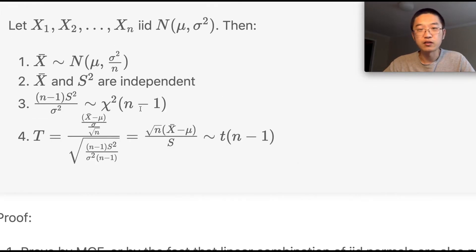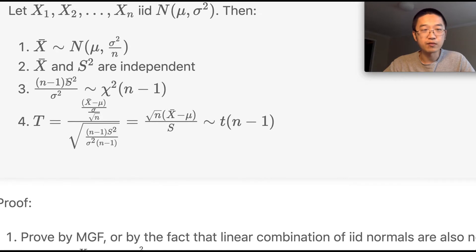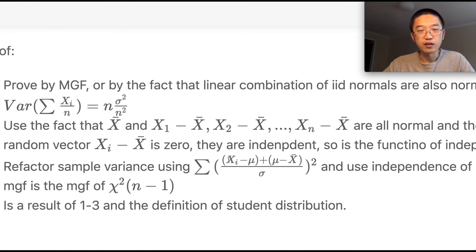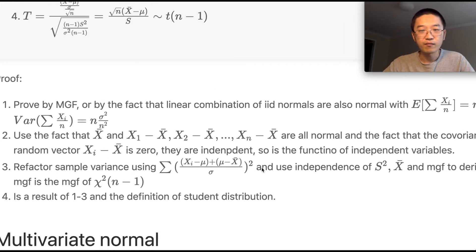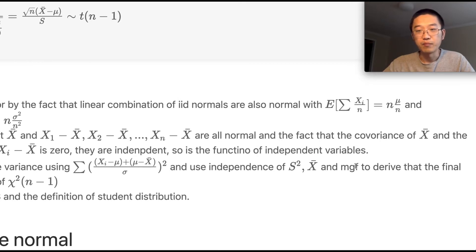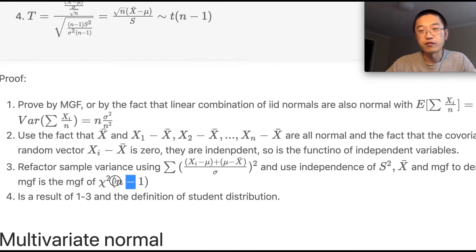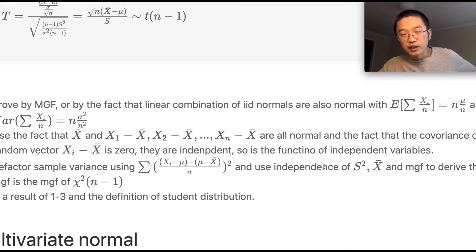For the chi-square(n−1) result: if you refactor the sample variance term, it becomes (X_i − μ) plus (μ − X̄) divided by σ². Using the independence of sample mean and sample variance, and applying moment generating functions, we can derive that the final MGF matches that of chi-square(n−1).